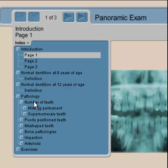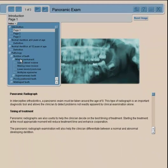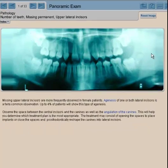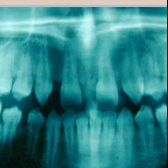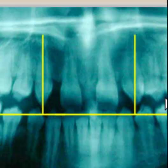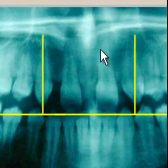Looking at the number of teeth, we can show you an x-ray — it's an older x-ray and not great quality, but you can still see that there are missing teeth here, and the angulation of the canines is actually normal. It's an unusual situation where the lateral incisors are missing but the canines have the right angulation.